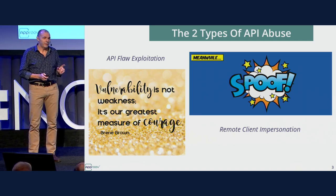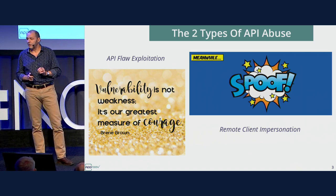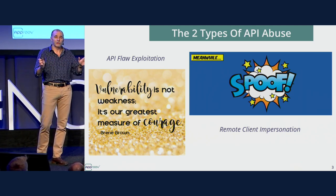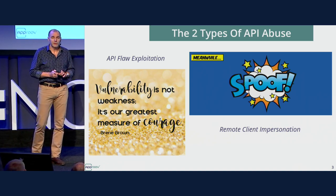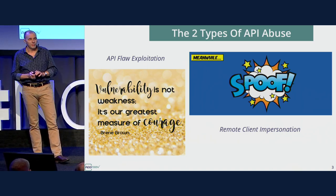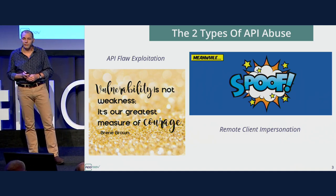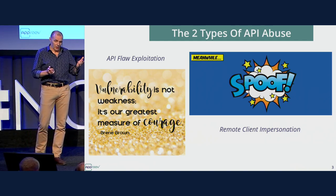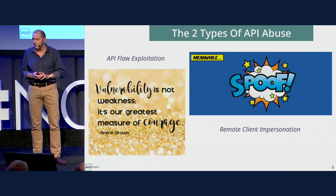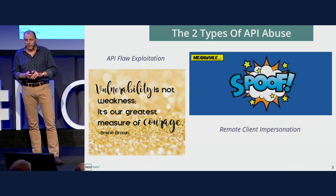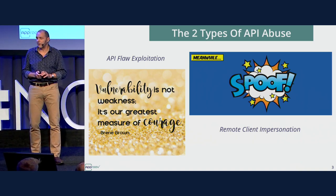There are two types of API abuse and I'm going to focus mainly on one of them today. One is to do with vulnerabilities — vulnerabilities are clearly a very bad thing, and there are solutions that will help you find and fix them. We work with 42Crunch who are doing a presentation this afternoon. The second type is spoofing or impersonating remote clients, which is the one I'm going to talk about because that's really what we do.